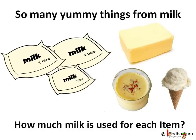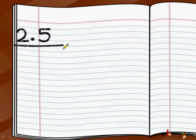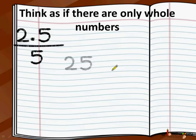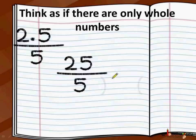We are going to use division for it. We write 2.5 divided by 5. Remember, just like we learned in decimal addition, decimal subtraction, and decimal multiplication, we perform the first step as if we were working with whole numbers, ignoring the decimal point. So we are going to first do 25 divided by 5, removing the decimal point. We will take care of the decimal point in the result in the second step.